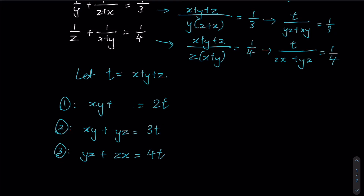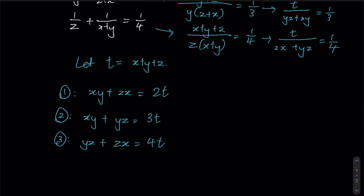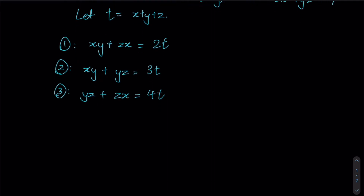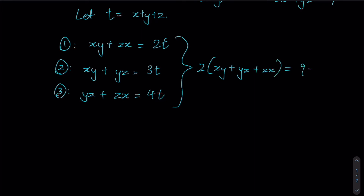I'll standardize my expressions by writing zx instead of xz from now on. Given that we have three equations with the same three expressions throughout — xy, yz, and zx — if we add all three equations together we obtain twice the sum of each expression. This equals the sum of 2t, 3t, and 4t, giving us 9t. Dividing both sides by 2 gives us xy plus yz plus zx equals 9t over 2, which I'll call equation 4.